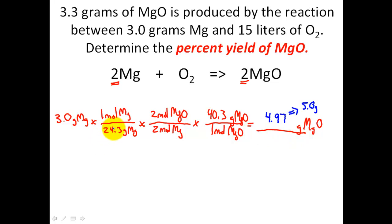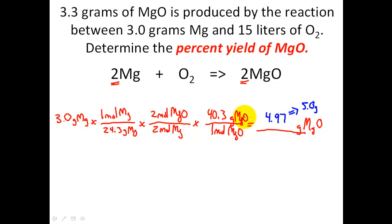When all is said and done, I've calculated 4.97 grams of MgO should be produced if I use up all of my magnesium. So technically, I have the potential of making about 5 grams of MgO. Just a quick refresher: the 24.3 came from the atomic mass of magnesium on the periodic table, and MgO is a combination of Mg plus O from the periodic table, giving us 40.3 grams per mole.